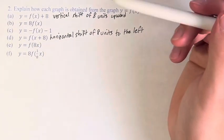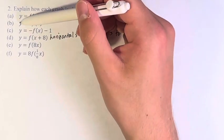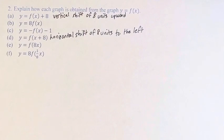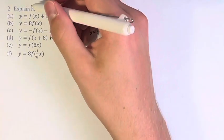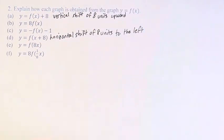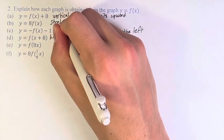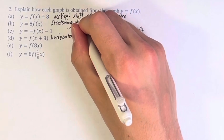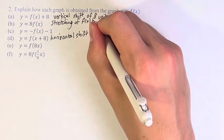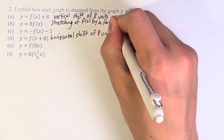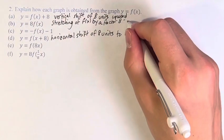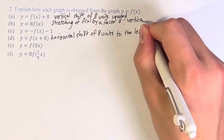Next, we can do y equals 8f of x and y equals f of 8x. This one is the stretching of f of x by a factor of 8. And it is done on the outside, so it is vertical.